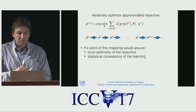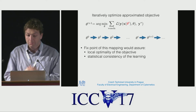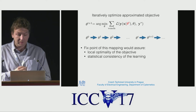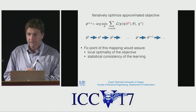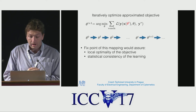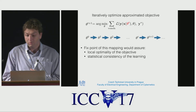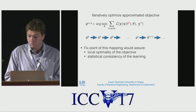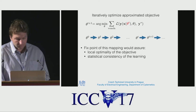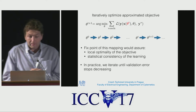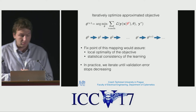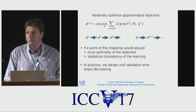Ideally, we would like to find a fixed point of this mapping, which would assure local optimality of the objective and statistical consistency of the learning process. By statistical consistency I mean that the training distribution of sparse measurements would correspond to the one obtained by the planning procedure. In practice, there are no guarantees that any fixed point exists, so what we do is just reiterate until validation error stops decreasing.